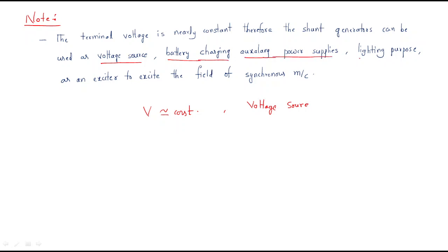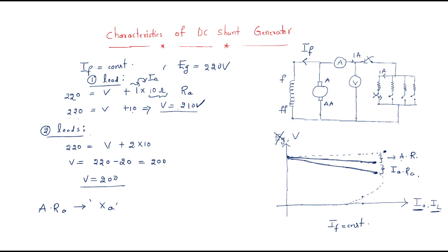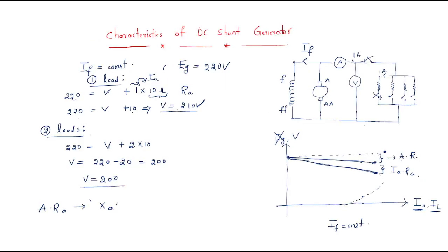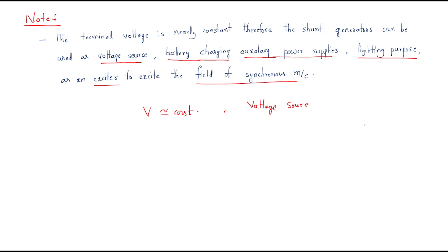The DC shunt generator is also used for lighting purposes and as an exciter to energize the field winding of a synchronous generator. Although there is a small drop when load increases, this drop is practically very small. These are the characteristics and applications of the DC shunt generator.